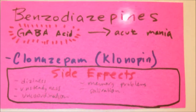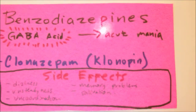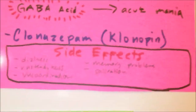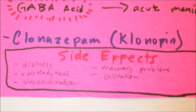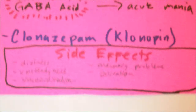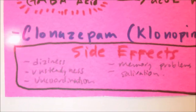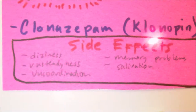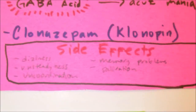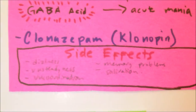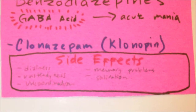Benzodiazepines are commonly used for acute mania. The most common NCLEX medication in the benzodiazepine category used as an anti-seizure drug is clonazepam, also known as Klonopin.